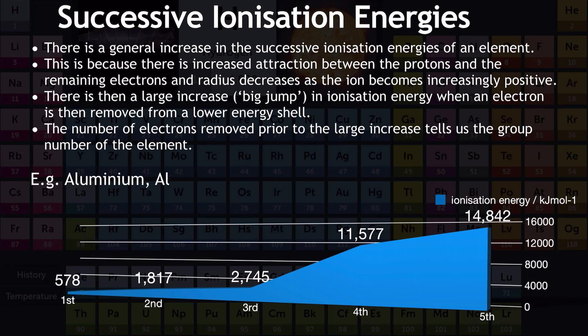At the fourth successive ionization energy of aluminium, there's a large increase — often referred to as the big jump. This fourth electron must be in a lower energy shell, meaning aluminium had three electrons in its outer shell, which is why it's in group 3 on the periodic table. The number of electrons removed prior to the large increase in successive ionization energies tells us the group number of the element.